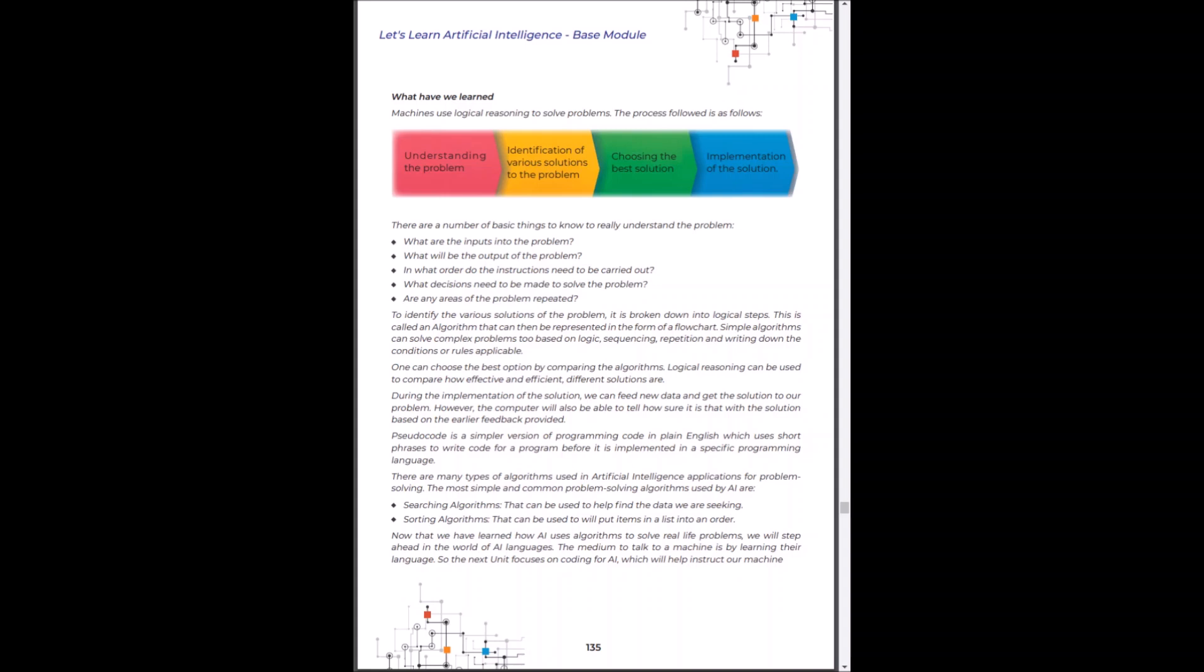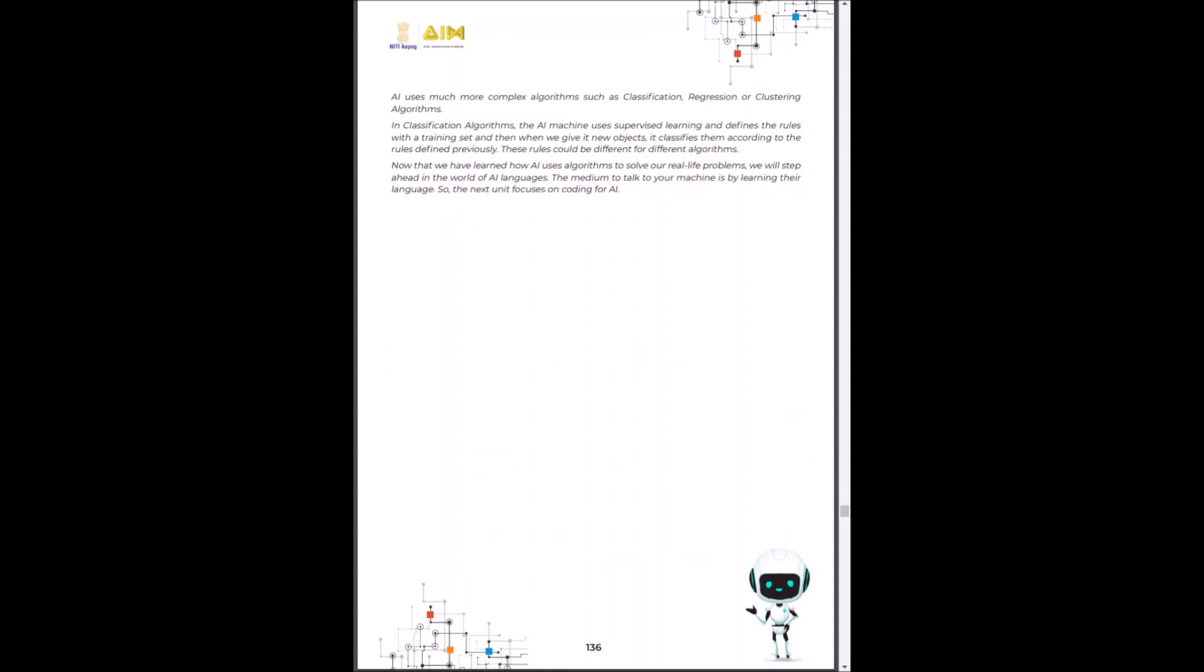The most simple and common two examples are searching algorithms and sorting algorithms. Now that we have learned that AI uses algorithms to solve real-life problems, we will step ahead and actually explore the various programming languages that AI and machines use. We will see you in the next module to understand different programming languages.